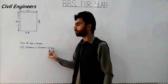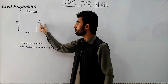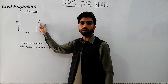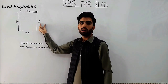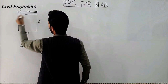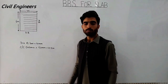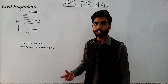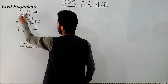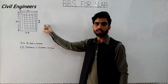The distance between two bars is 0.15 meters or 150 millimeters. MB means main bars and DB means distribution bars. Main bars are those bars which are placed lengthwise. Distribution bars are those bars which are placed breadth-wise.